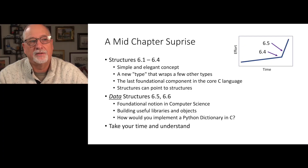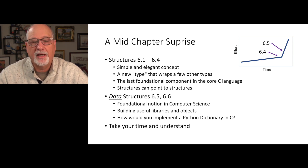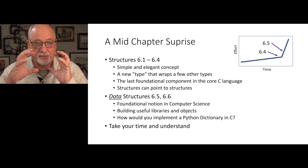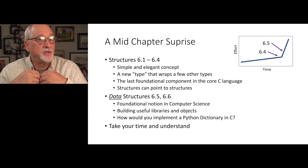Welcome to chapter 6. In this chapter we talk about structures, but so much more. There is a mid-chapter surprise in this book, and I'm sure it's caused a few too many people to drop out of a first computer science course. In sections 6.1 through 6.4, we're learning the C language and just what a structure is. It's a simple, beautiful, elegant concept — a wrapper for a whole bunch of types that groups them together so you can create a new type.